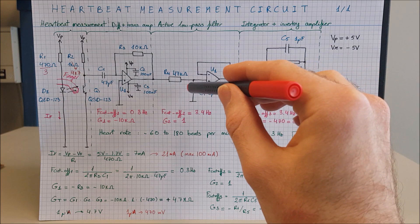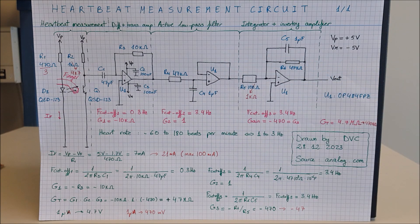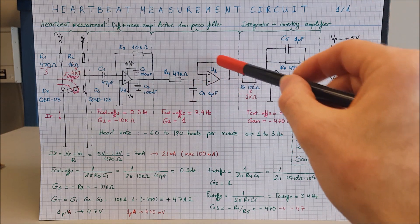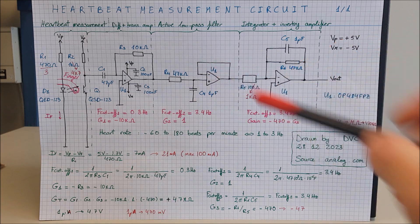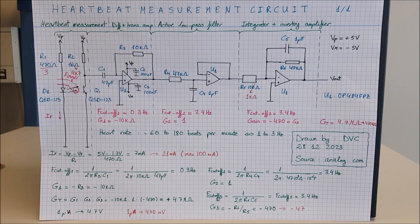Now the problem with this arrangement is that if you load the filter, the amplitude is going to go down considerably because this cannot source much power. We solve this with this buffer. The buffer has a high input resistance, meaning a high input impedance.